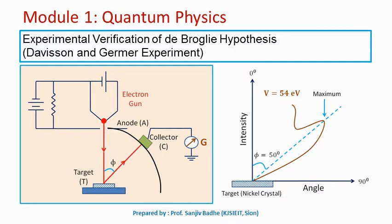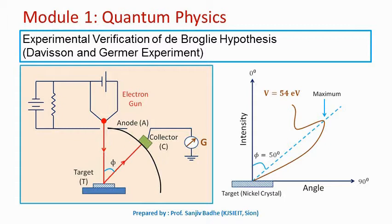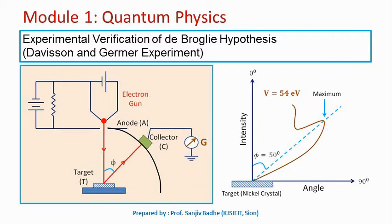De Broglie proposed that since wave-particle duality exists for photons, it must exist for every type of particle. He said there is a wave associated with every moving particle, and the wavelength of that wave is given by lambda equal to h upon p, where p is momentum and h is Planck's constant. This is called the de Broglie relation.